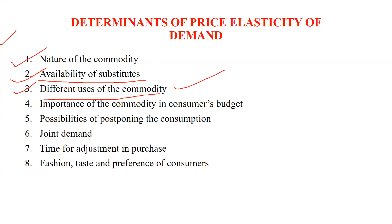The third determinant is different uses of the commodity. For example, electricity has various uses — different kinds of uses for the same commodity. Similarly, other commodities also have various uses. Then we come to the importance of the commodity in the consumer's budget. Where we have placed this particular commodity in our budget — if it is least important we can leave it, if it is most important then demand must be created at whatever price.